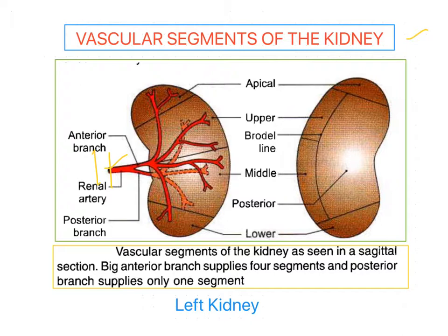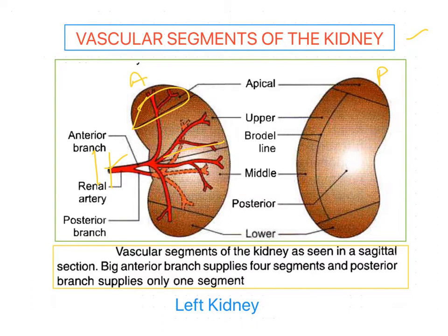Each renal artery, on entering into the hilum, divides into five segmental branches, each branch supplying a definite segment of the kidney. Those branches are called segmental branches. In this diagram you can see the left kidney segmental branches, both on the anterior aspect as well as the posterior aspect.